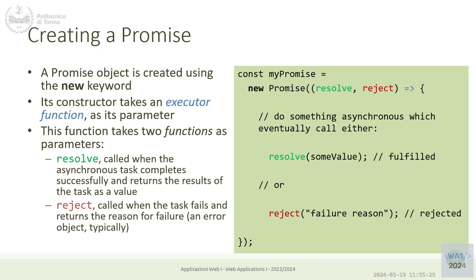Inside this callback we can do any kind of call — nested callbacks, whatever we want — as long as sooner or later this function will call resolve or reject, asynchronously. Typically here we will schedule something that will later return a value. The constructor takes what's called the executor function — the function that will be executed asynchronously.